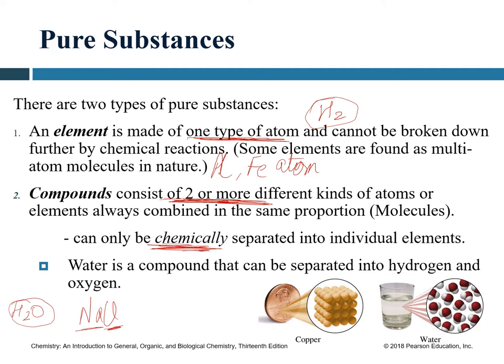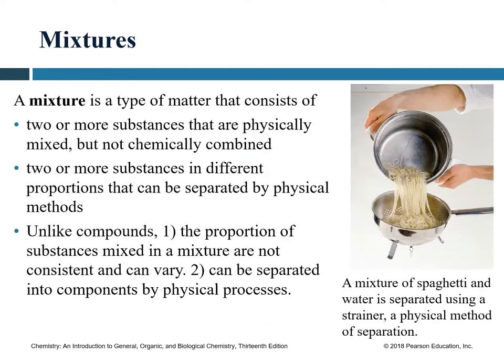In a compound, elements are combined in a certain proportion by a chemical process, so to separate them you must use a chemical process as well. For instance, you cannot physically separate water into hydrogen and oxygen — you have to use a chemical process to do that.